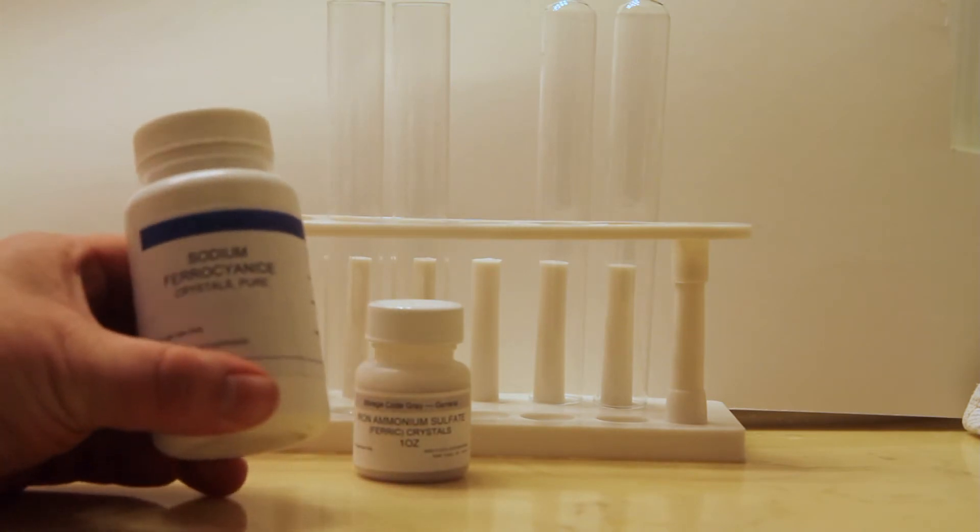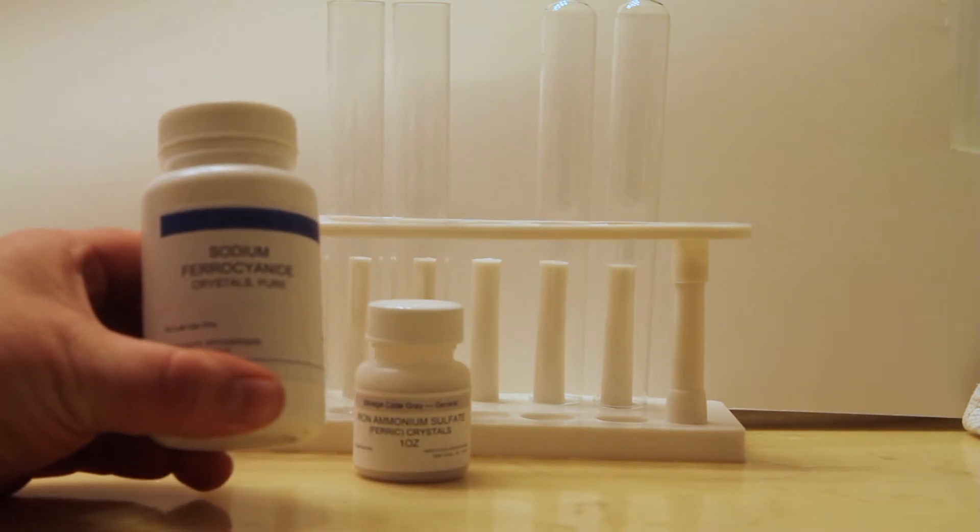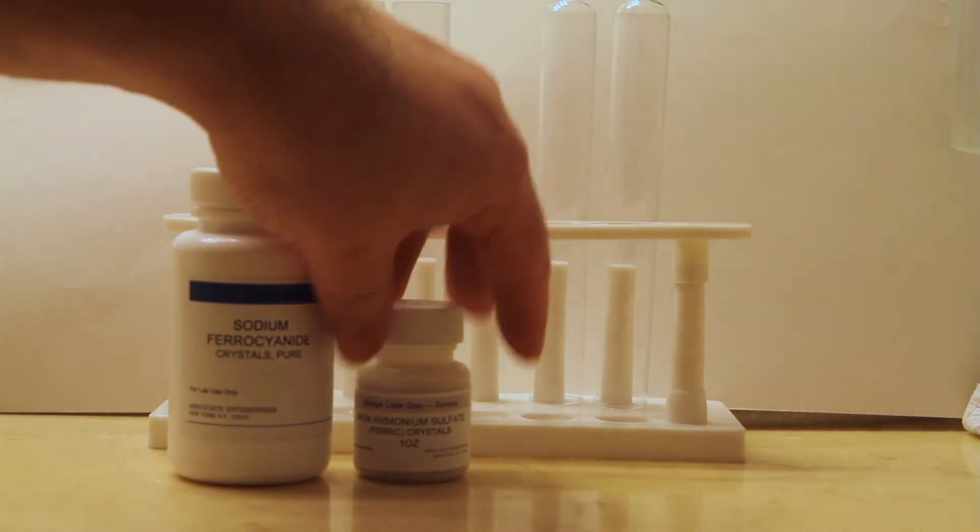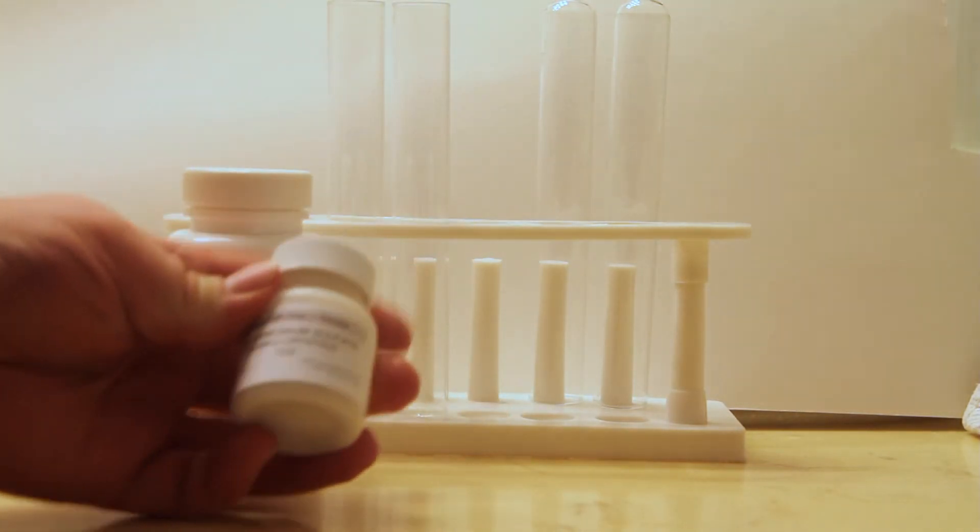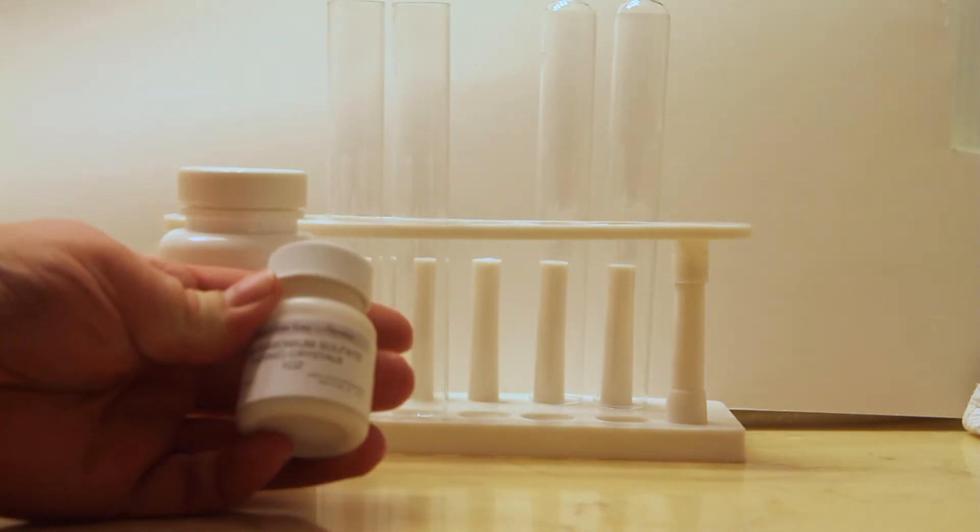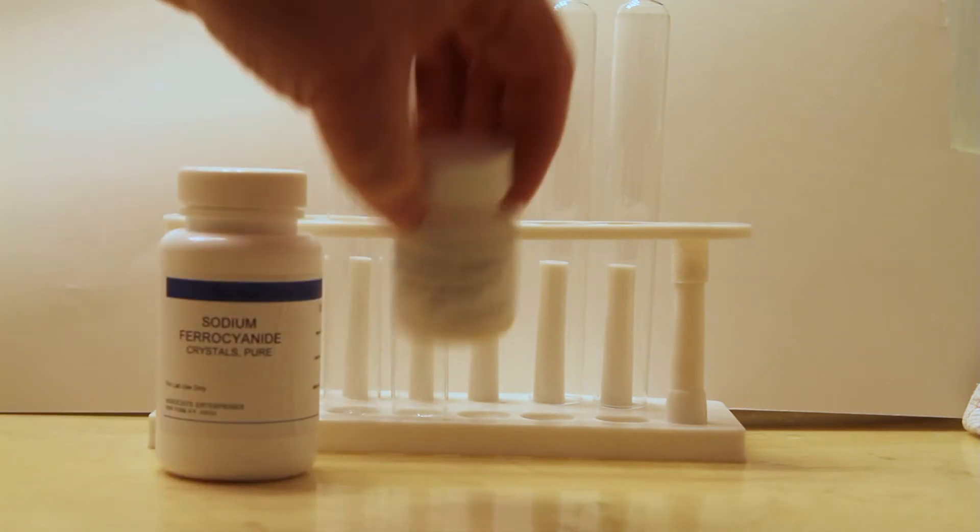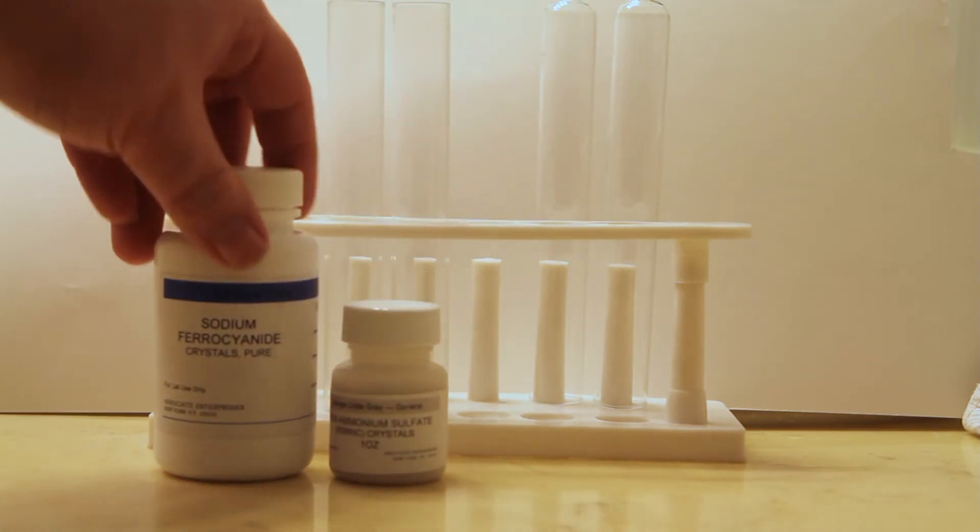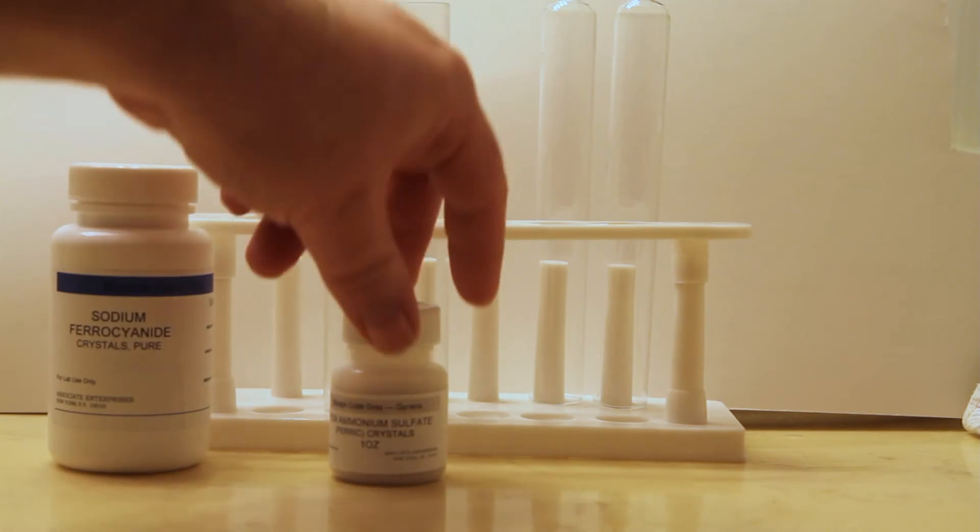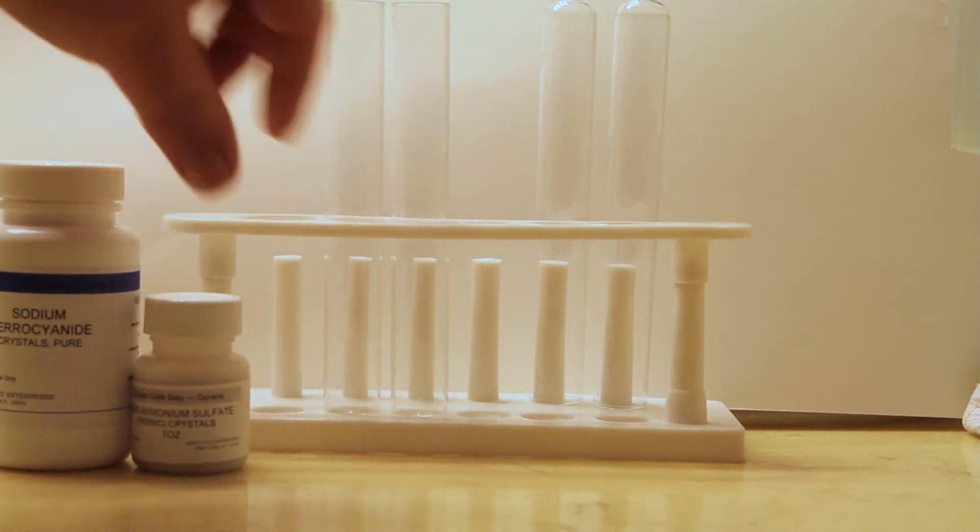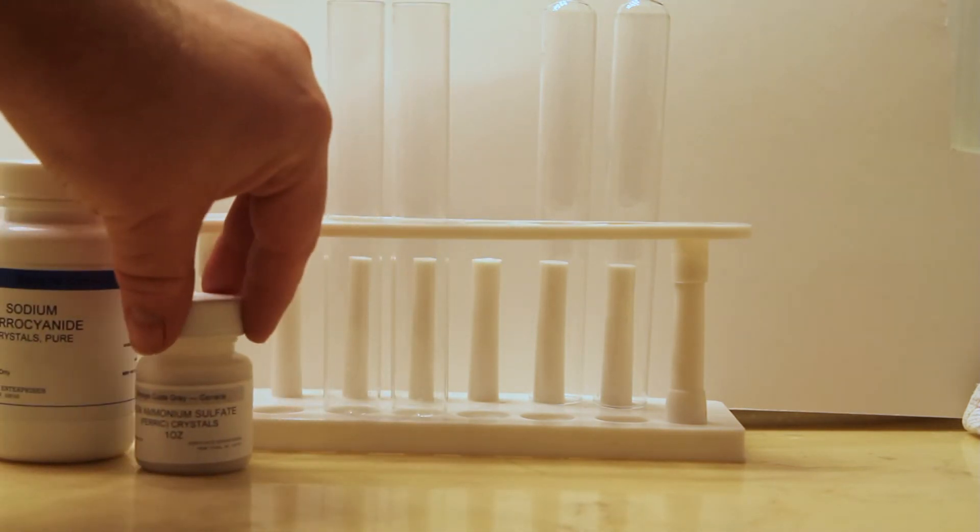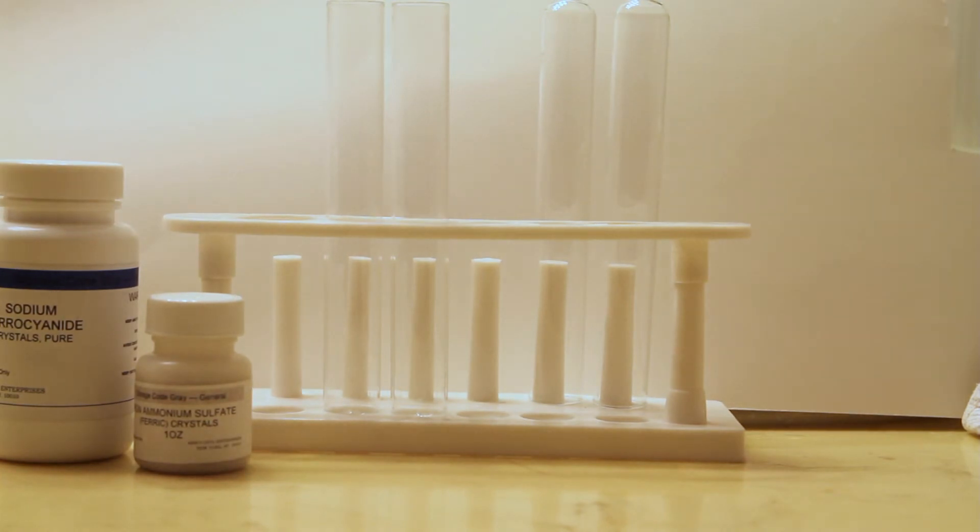What we're using is sodium ferrocyanide and iron ammonium sulfate, also known as ferric ammonium sulfate. Both of these compounds give a relatively colorless solution as opposed to ferric chloride. Ferric chloride when spilled can stain. It is also used in etching copper and will etch other metals if given the chance.